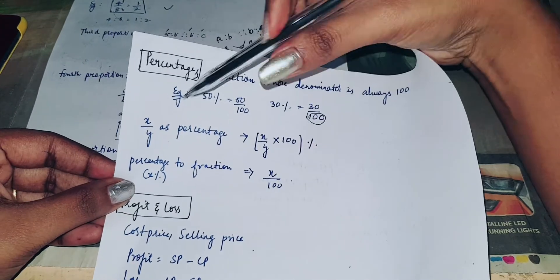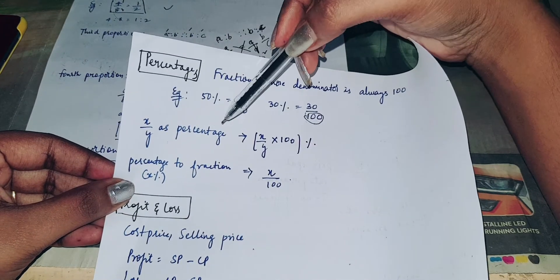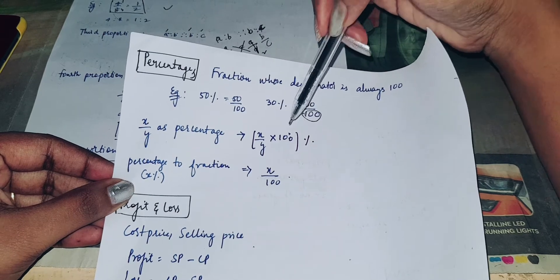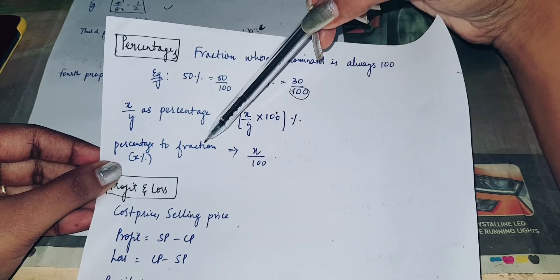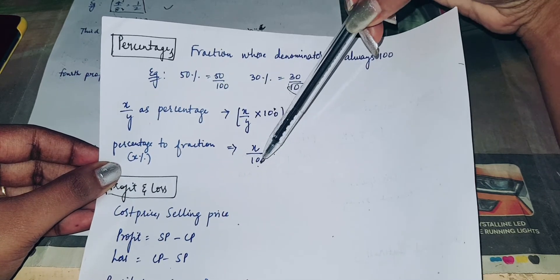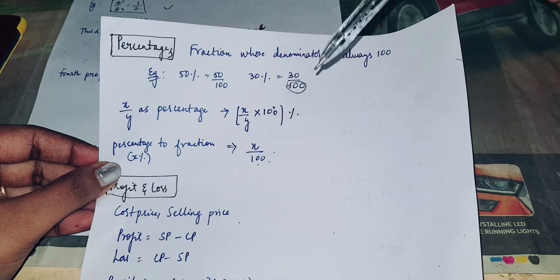If you denote a fraction as a percentage, multiply by 100, and to convert a percentage to a fraction, divide by 100.